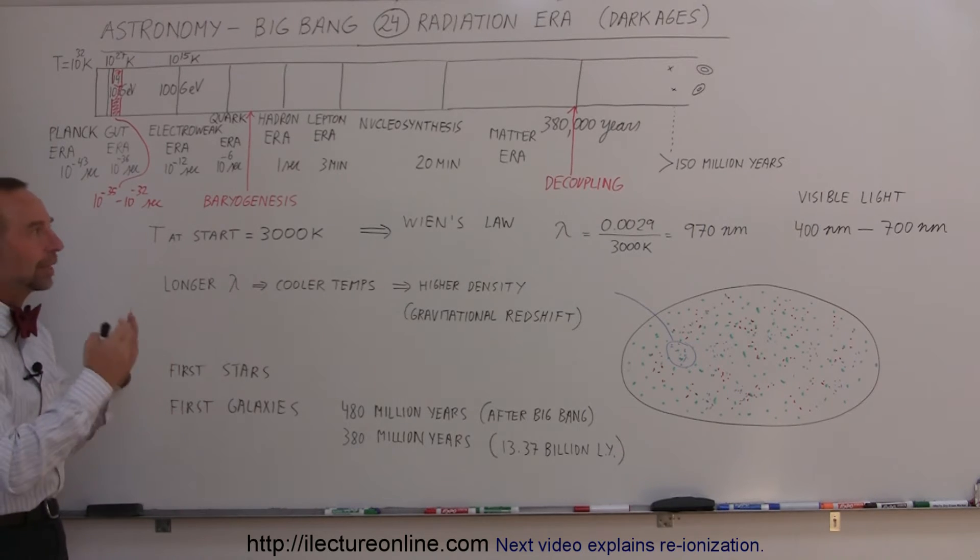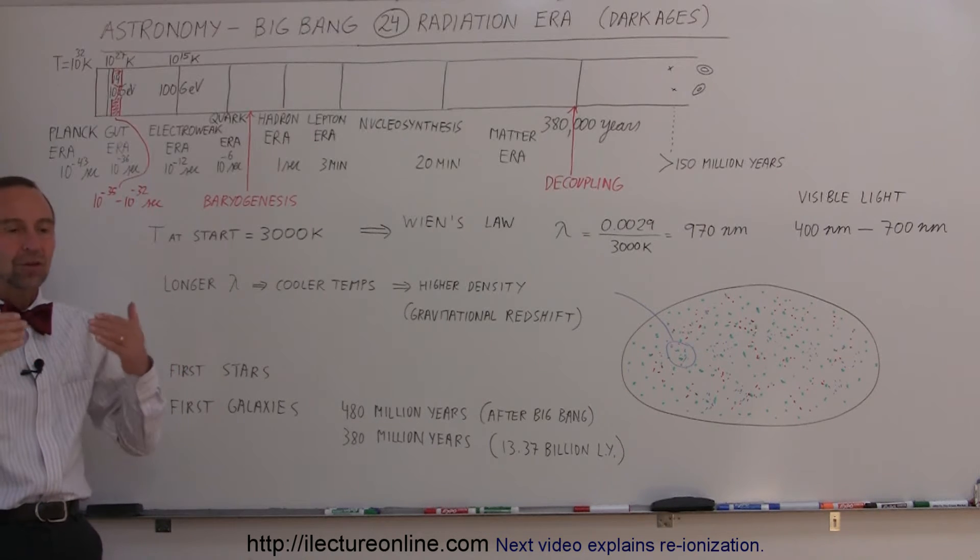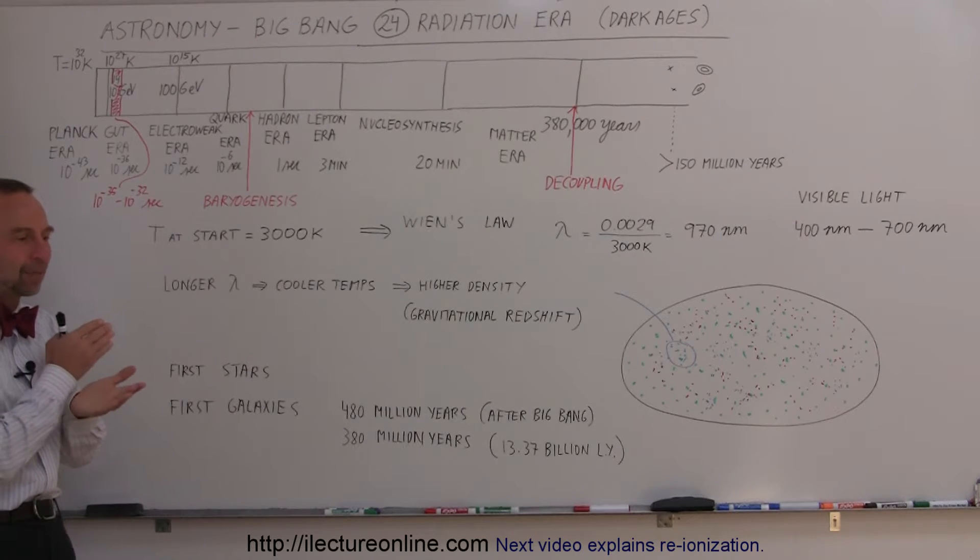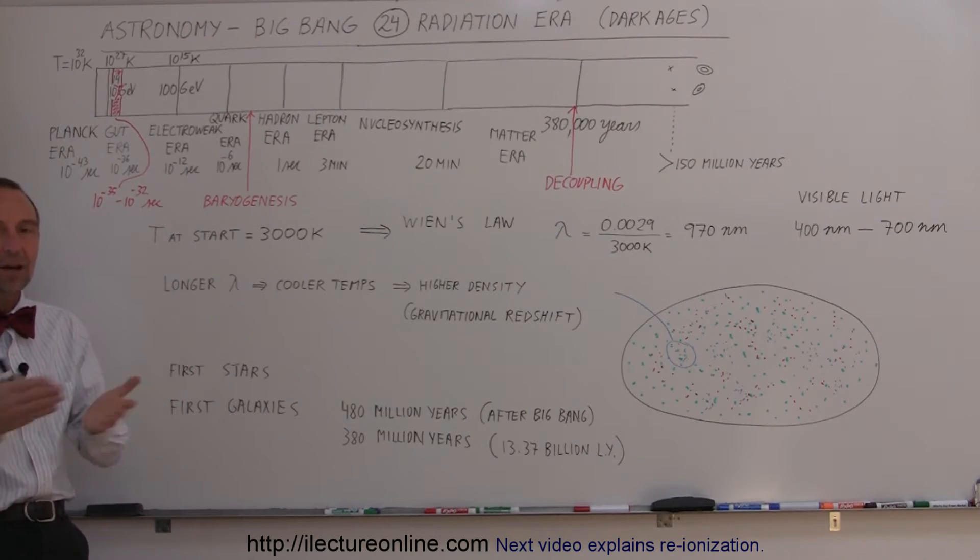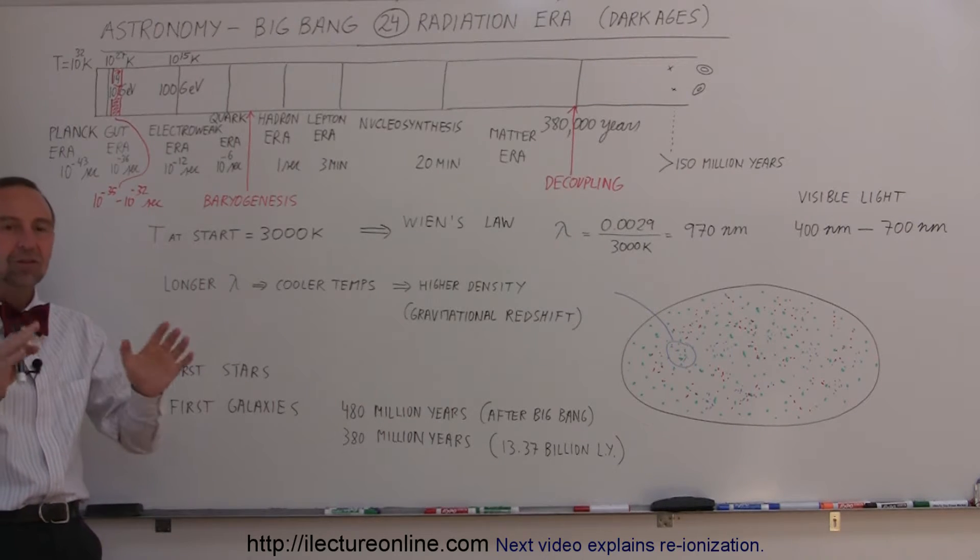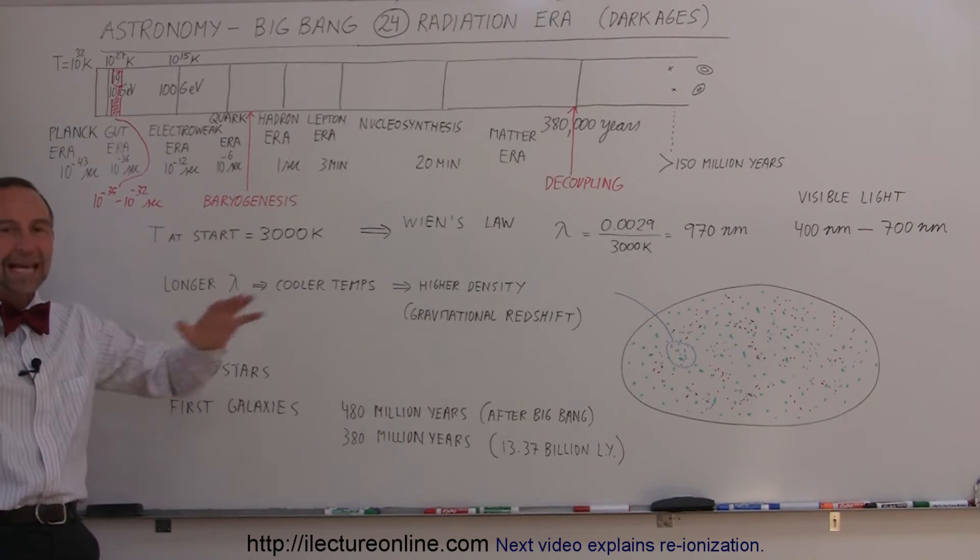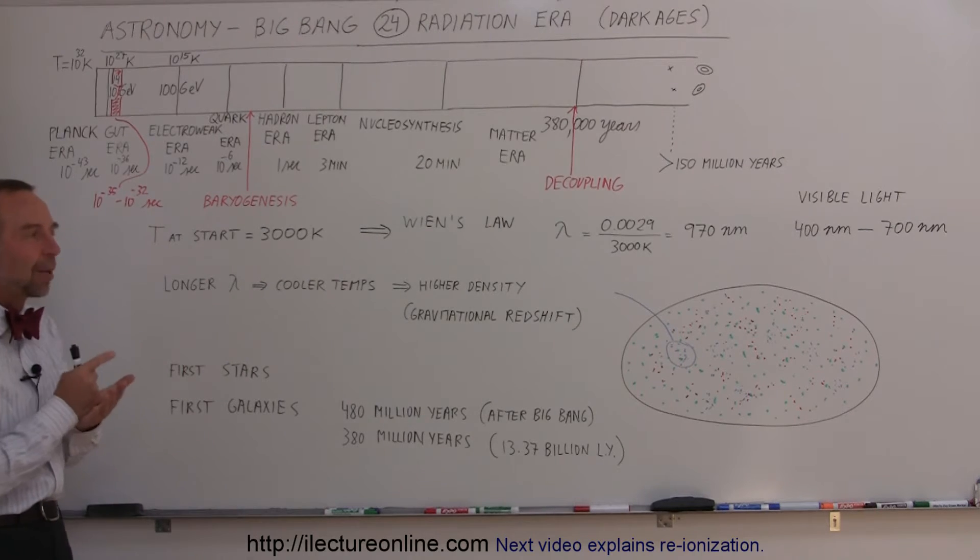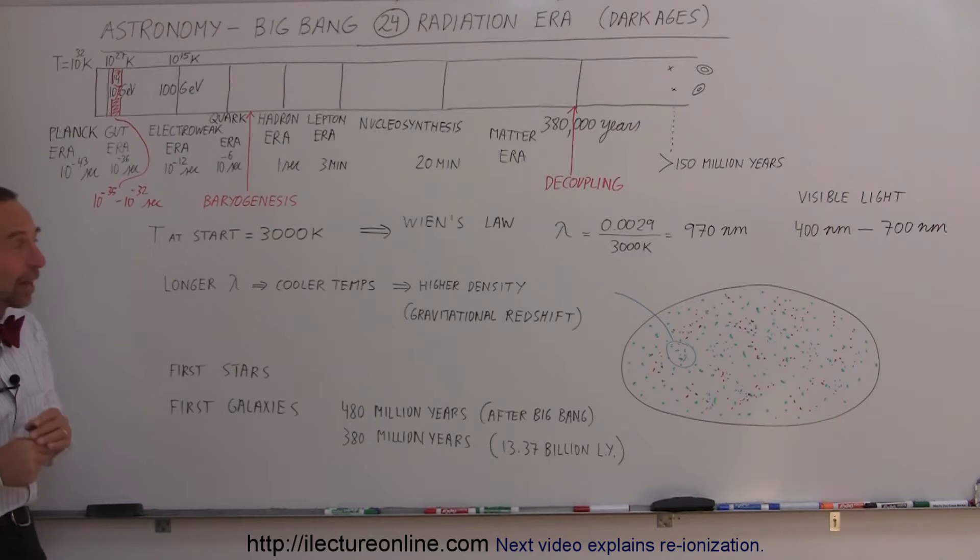Matter and radiation became separated—that's what we call decoupling. After that, the universe fell into complete darkness, without visible light, without stars and galaxies, just hydrogen, some helium, and radiation. But the radiation was no longer at visible wavelength; it was now at infrared wavelength.